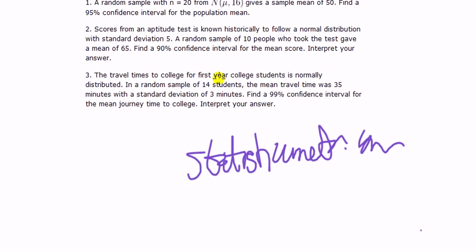Finally, the travel time to college for the first year. College students is normally distributed. In a random sample of 14 students, the mean travel time is 35 minutes, with a standard deviation of 3 minutes. Okay, fine. The confidence interval for the population mean.